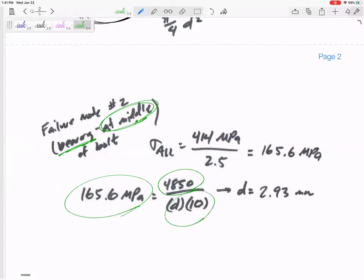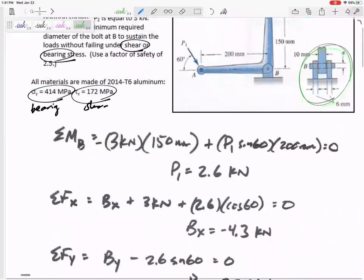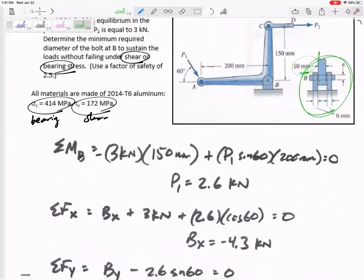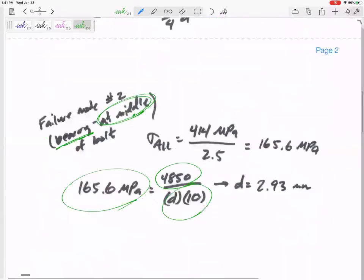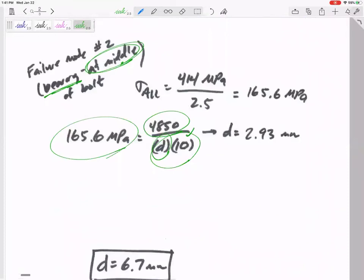I divide it by this rectangle which has the diameter of the pin and a thickness - this thickness right here at the middle is 10 millimeters. I know the thickness is 10, I'm trying to calculate the diameter, so I calculate the diameter to be 2.93 millimeters. That's the diameter that it would fail due to bearing.